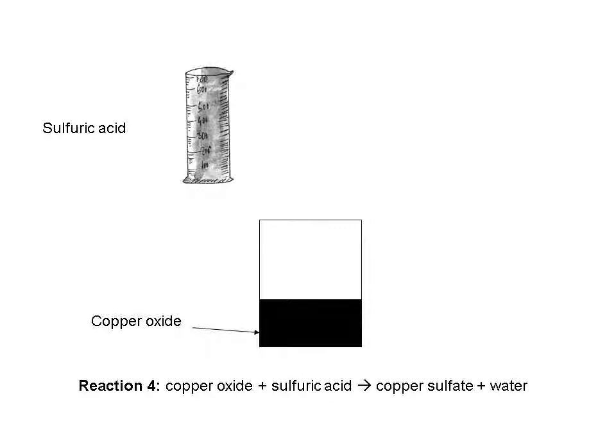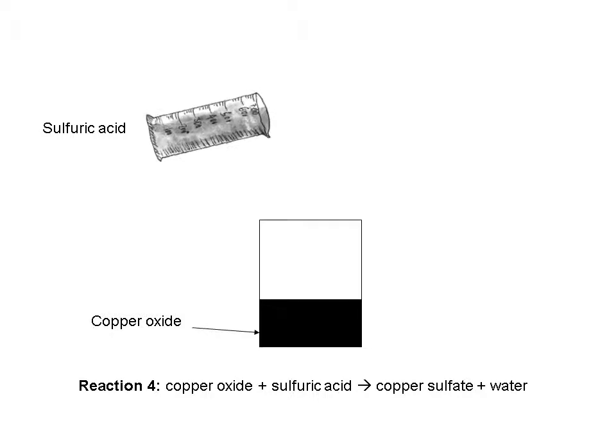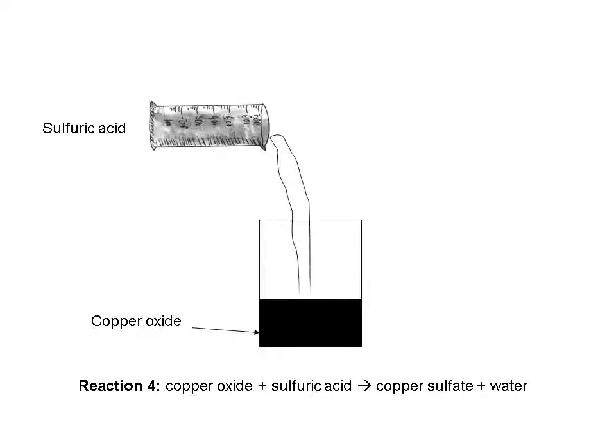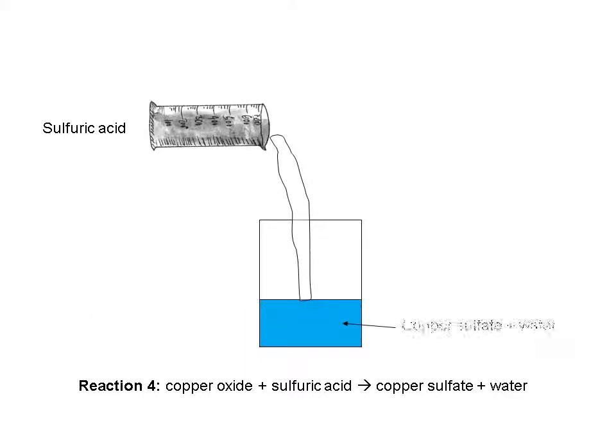Part 4 of the reaction involved turning that black copper oxide into copper sulfate, which is a pale blue color. And to do that, we had to add some sulfuric acid. As the sulfuric acid went in, and with lots of stirring, the solution finally went to that nice clear blue color. The other product of the reaction was water. And since we already had water in the solution, it's not really going to make any difference to the appearance.